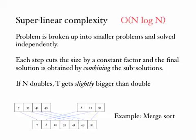So in this case, if N doubles, time gets slightly bigger than double. If you can't remember how merge sort works, and why merge sort would be order N log N, go and watch the video on merge sort.